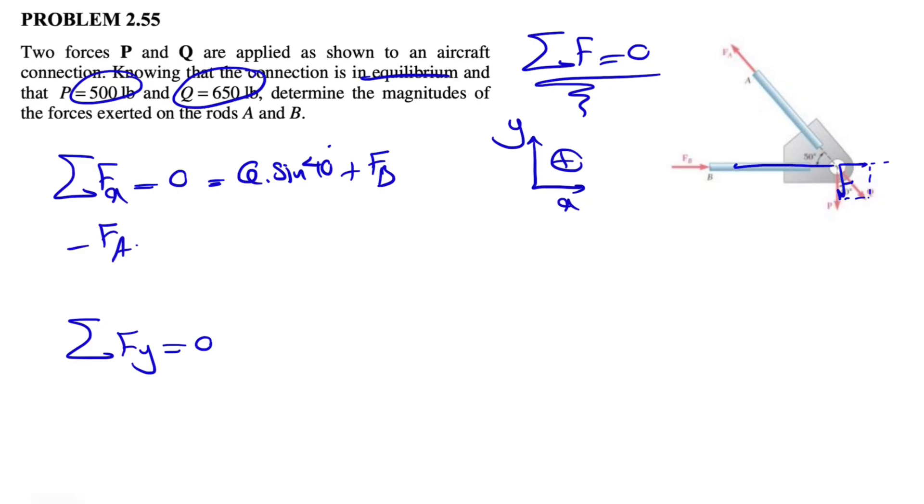This will be the X component of FA, and this will be the Y. Since we have the angle with X axis, it will be cosine of 50 degrees. It will be equal to zero. If we look at this, we'll see that we have both unknowns in here, so we cannot find our unknown in here.